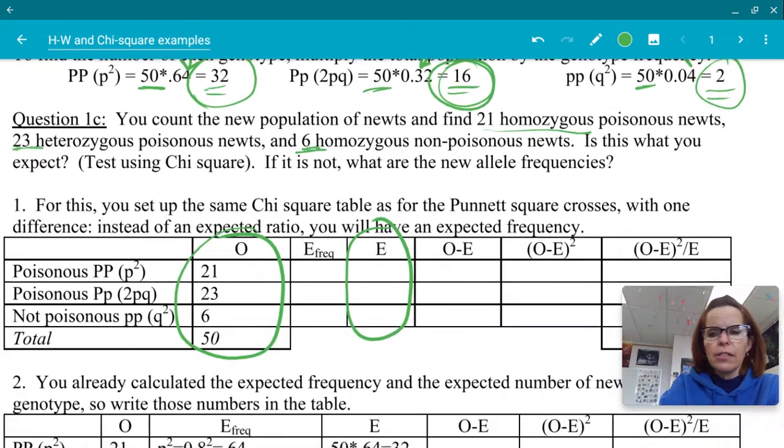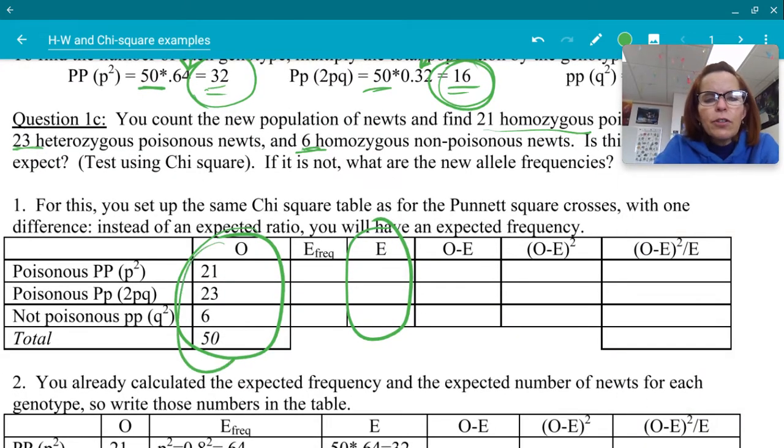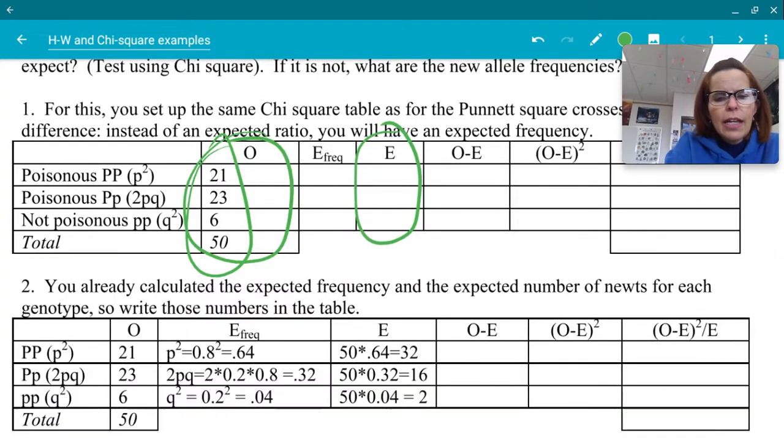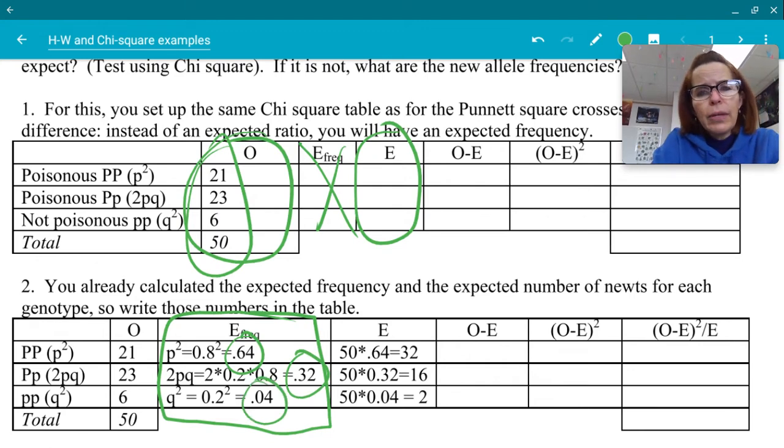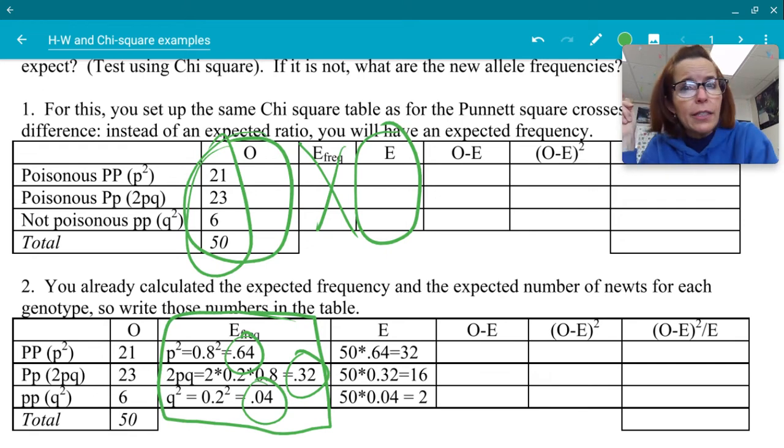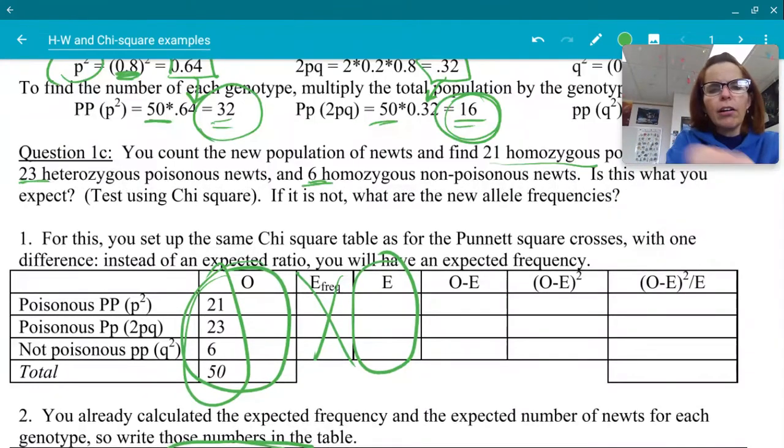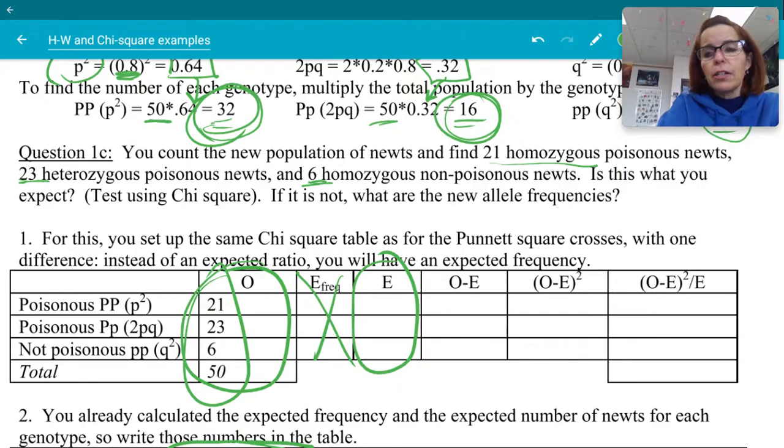All right, so we've got our observed right here. That's what you saw in the actual population. Now, we need our expected. Down below, I'll just show you that they have a column for frequency. You don't need that column, but if you want that column, that's fine. So you could ignore that. The frequency is just these 0.64, 0.32, and 0.04s that we calculated, the p-squared, the 2pq, and the q-squared. If you want to include them, that's fine, but you don't need to. So we calculated already the expected, 32, 16, and behind my picture is 2. So this is 32, 16, and 2. And now we do a regular chi-square problem, which some of you might be rusty at, and you really need to know how to do these. There will be one on your FRQ this time, and there for sure will be one on your AP Biology exam in May.